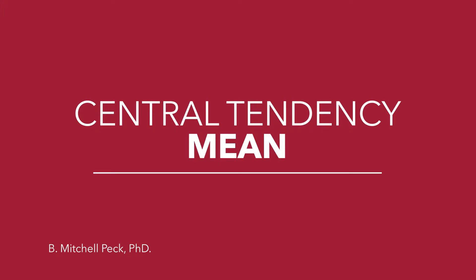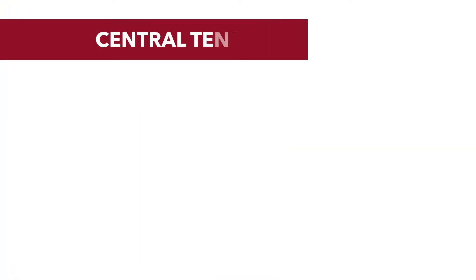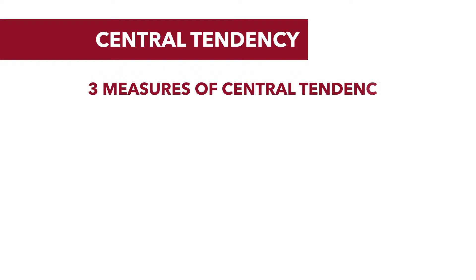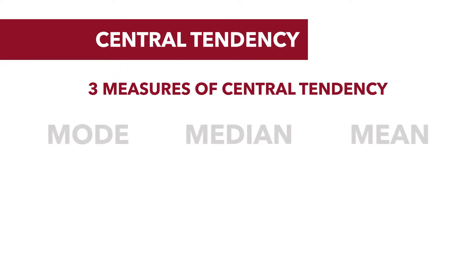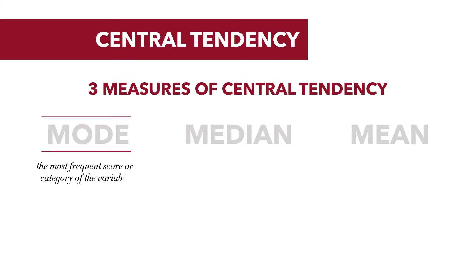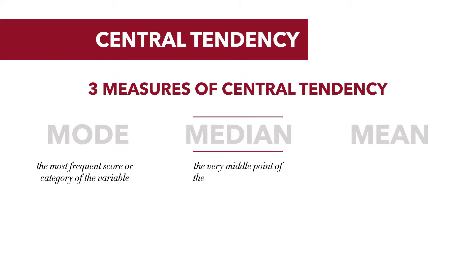In this tutorial, we continue our discussion of measures of central tendency. Recall that there are three measures of central tendency: mode, median, and mean. We previously discussed the mode, which is the most frequent score or category of a variable. The median is the very middle point of the distribution or the list of observations. And in this tutorial, we'll discuss the mean.